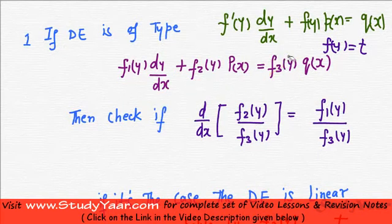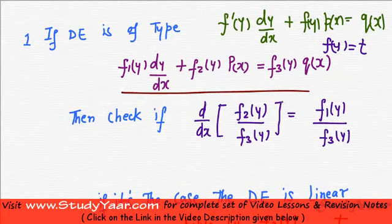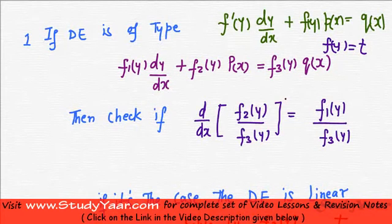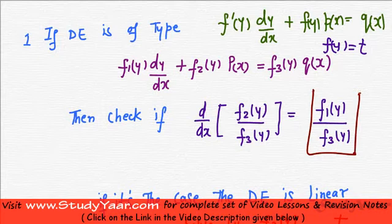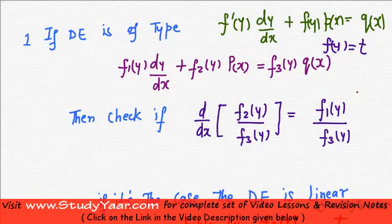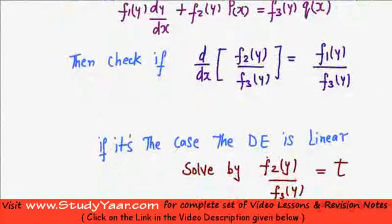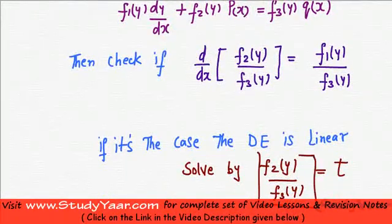If my equation is of this type, then I would check if my f2(y) by f3(y) derivative is equal to f1(y) upon f3(y). If it is the case, then I know for sure this is a linear differential equation and I can solve it by substituting f2(y) upon f3(y) equal to t.